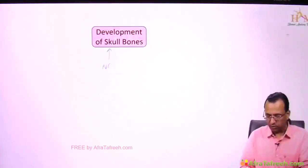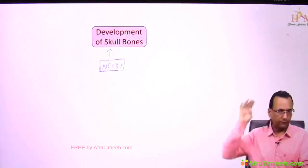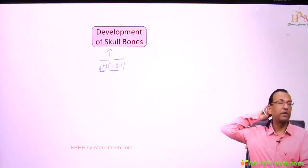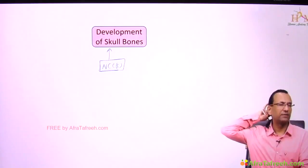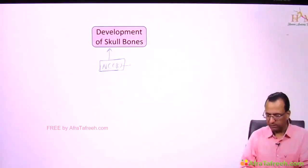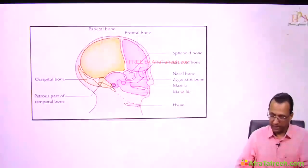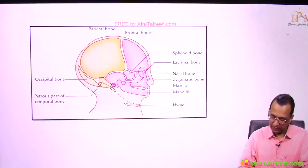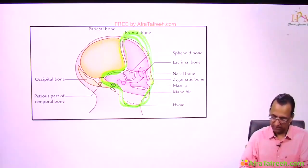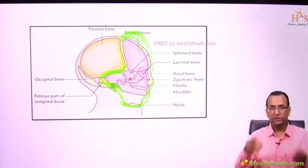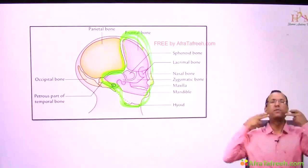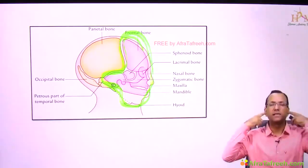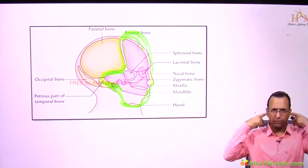Most of the skull bones are developing from neural crest cells, but not the posterior bones — they come from paraxial mesoderm, which is primary mesoderm. Looking at the diagram, the anterior and lateral skull bones are all neural crest cell derived: the anterior lateral skull bones, the mandible bone, the hyoid bone, and the malleus, incus, and stapes are all from neural crest cells.